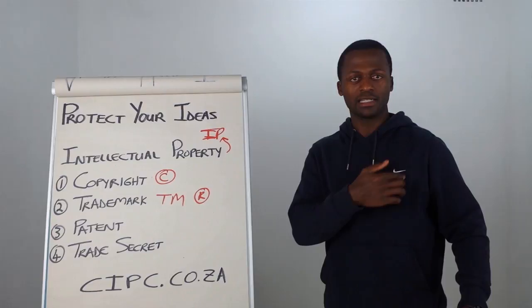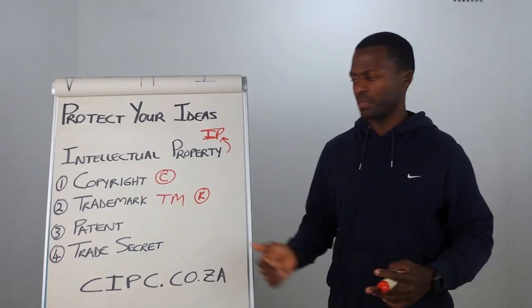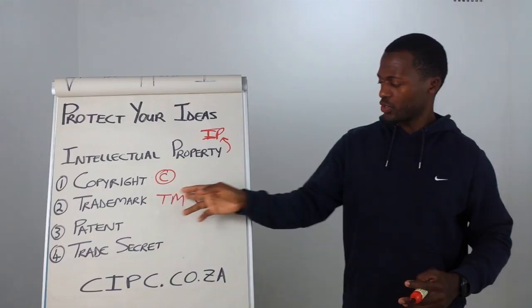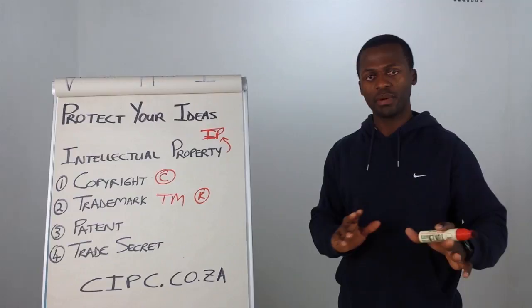A trademark is normally depicted by the small TM at the end, or an R with a circle around it. Companies put these as well if the trademark is still relatively new and people don't know about it much in the industry.